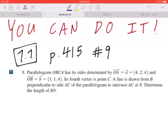Hi everyone, let's take a look at number 9 on page 415. Parallelogram OBCA has its sides determined by vector OA which equals vector a = (4,2,4) and vector OB which equals vector b = (3,1,4). Its fourth vertex is point C. A line is drawn from B perpendicular to side AC of the parallelogram to intersect AC at N. Determine the length of BN.